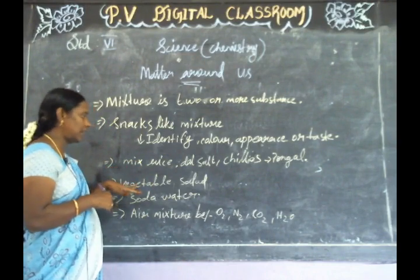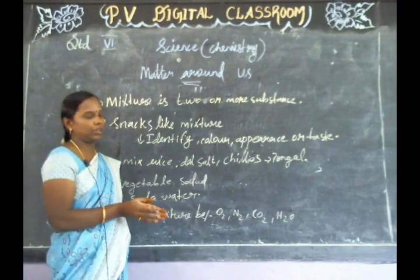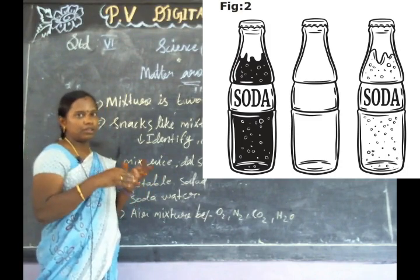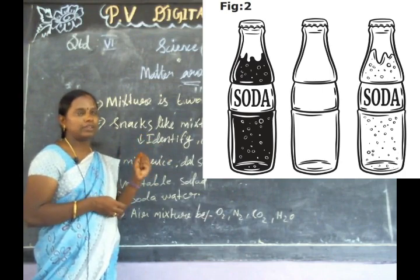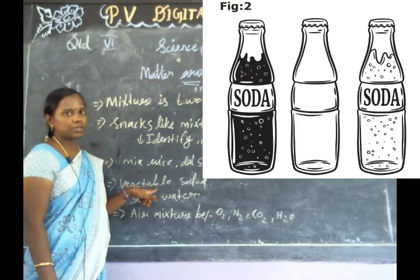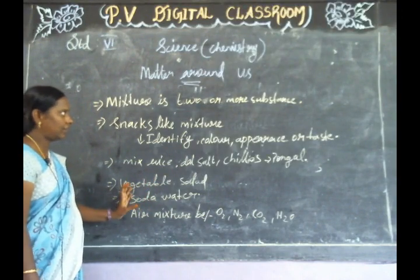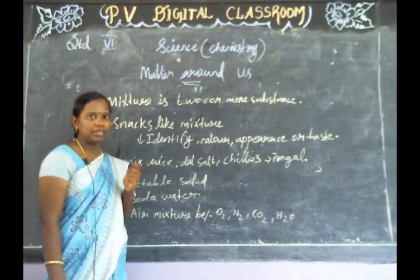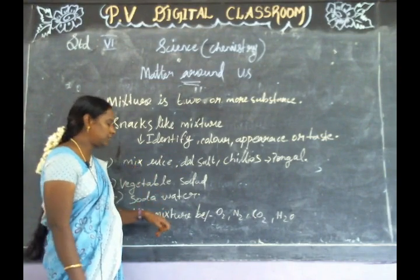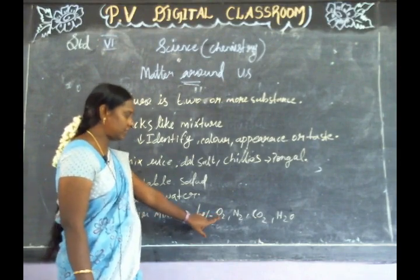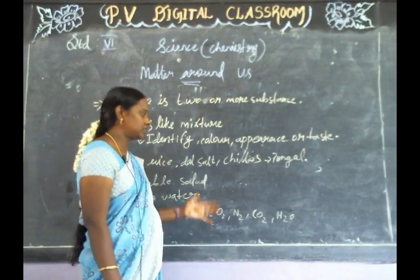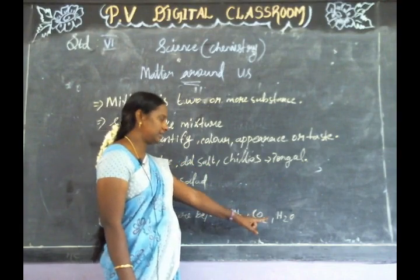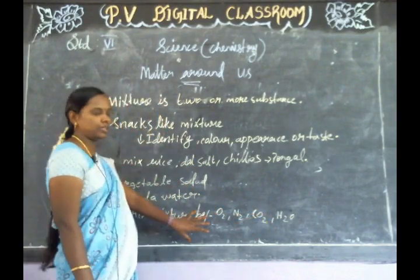And then soda water. Salad is one of the ingredients that we have to separate. Soda water is one of the ingredients present. Air and pathogen — the air we breathe — is one of the mixtures. Air is a mixture of oxygen, nitrogen, carbon dioxide, and water vapors. That is the mixture of compounds in our day-to-day life.